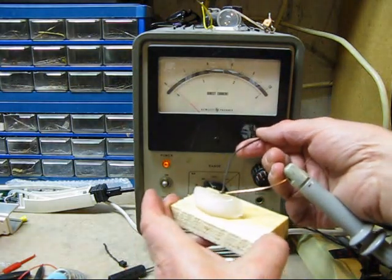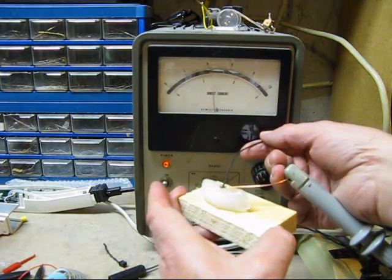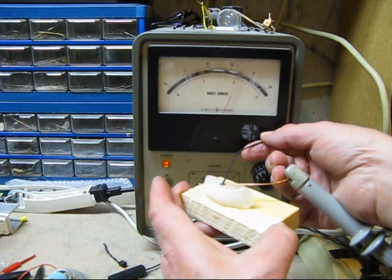By touching the opposite junction to a piece of ice we can easily observe 20 milliamps of current in the same direction.